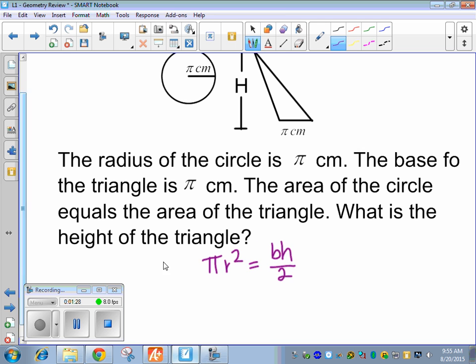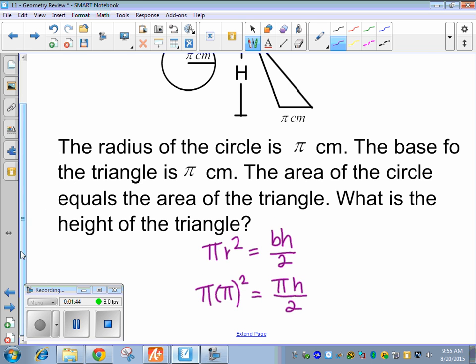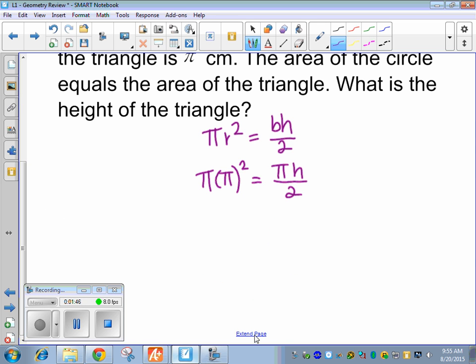And this time, the radius is pi. So we're going to plug that in. And over here, the base is pi. So we want to solve for h. So pi is not a variable, it is a number. So we can actually just isolate the h right here by multiplying by the reciprocal, which is 2 over pi.